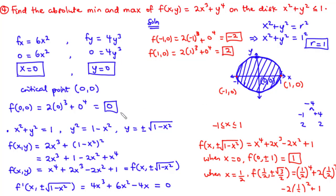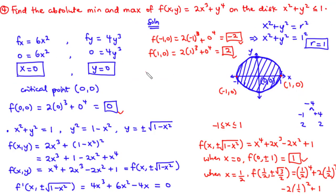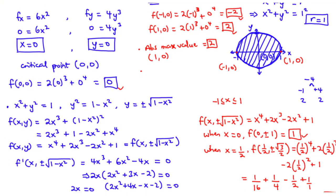Comparing all values: 0, negative 2, 2, 1, and 13/16 — the highest value is 2. Therefore, the absolute maximum value is 2, and it occurs at the point (1, 0). The least value is negative 2, so the absolute minimum value is negative 2, and it occurs at the point (negative 1, 0). That's it for today's video. Thanks for watching, and see you in the next video.